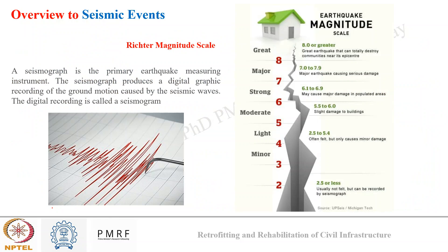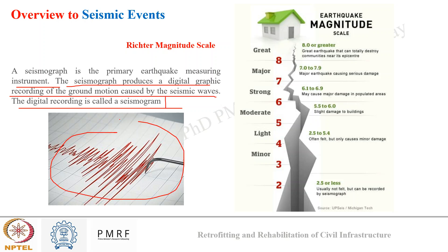For measuring the intensity of earthquake vibration we use seismographs — the primary earthquake measurement instrument. The seismograph produces a digital graphic recording of ground motion caused by seismic waves, and this recording is known as a seismogram. These vibration readings help us record the intensity of an earthquake event. A number is assigned to a particular earthquake — like a two, five, or ten magnitude earthquake — which is representative of the intensity of seismic activity.